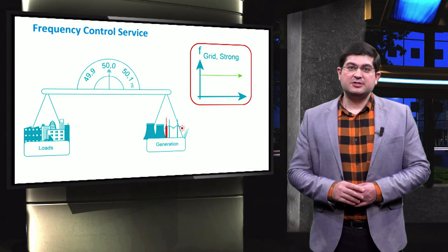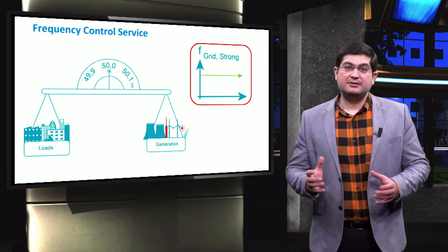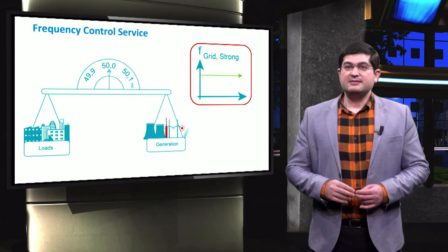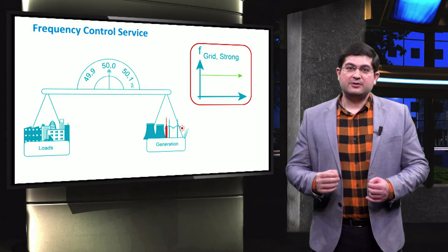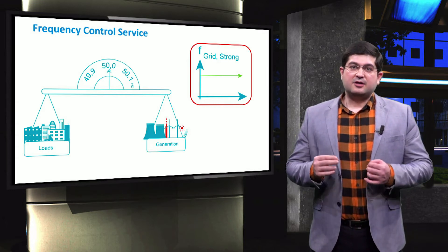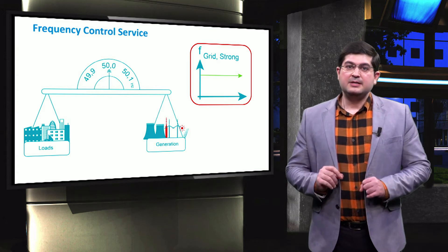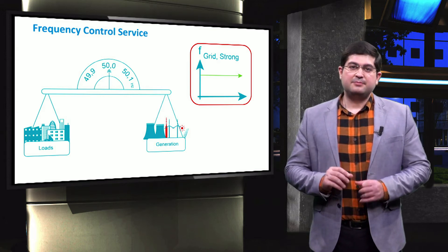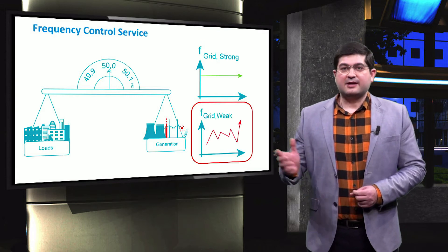On one hand, if the connection of the microgrid to the external grid is strong, then the grid dominantly controls the frequency of the microgrid. In other words, the rest of the components would only follow the reference frequency signal which is set by the grid.